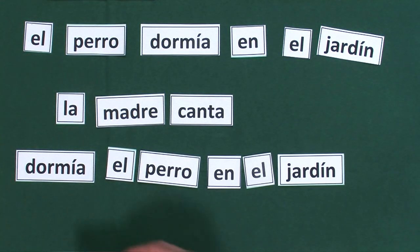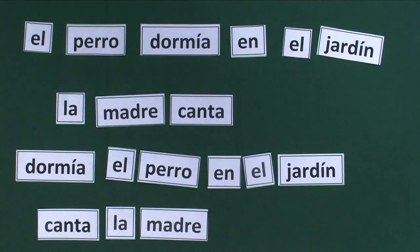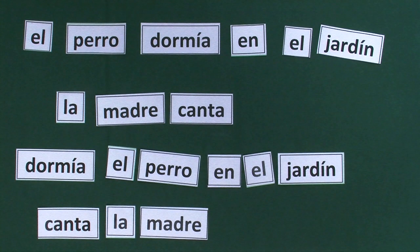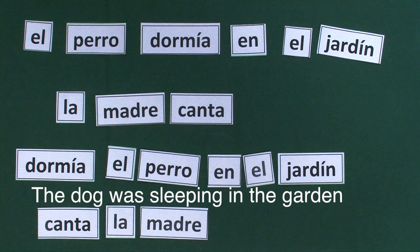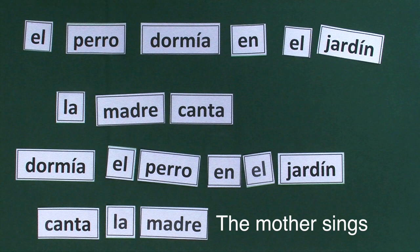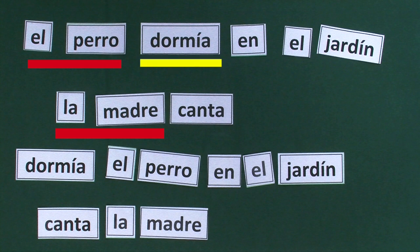Dormía el perro en el jardín? Canta la madre. The two versions of each sentence have the same meaning, but the word orders are different. In the first version, the subject el perro or la madre came first, in front of the verb dormía or canta.